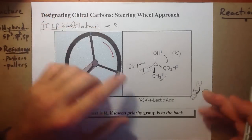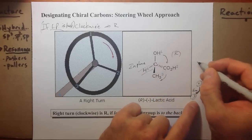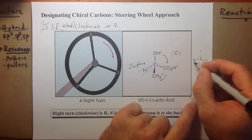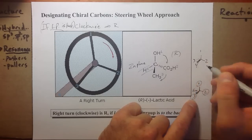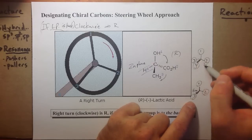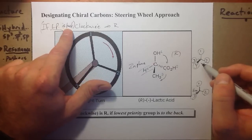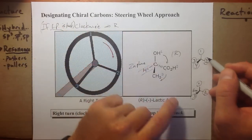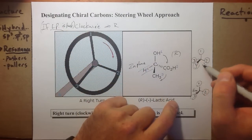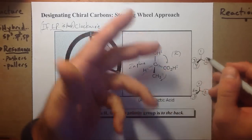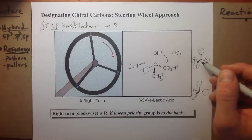Now, one thing I like about this approach: if we were to switch this, put three to the back and have four to the front, we still have clockwise rotation, but four is to the front. We can't use this rule then, because lowest priority group has to be to the back if clockwise is R. But you can just flip the rule. Clockwise is R if this is to the back. Well, if it's to the front, it's just S. You could flip the rule.